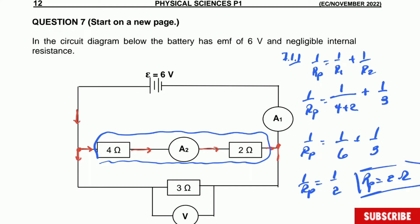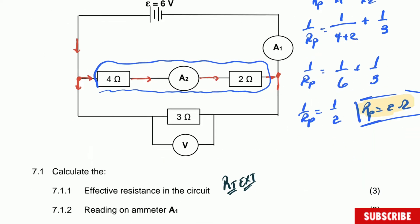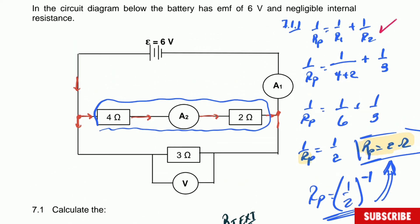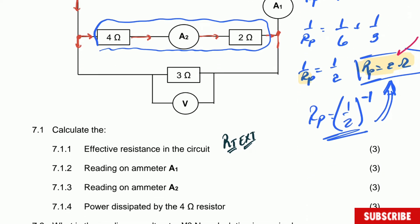There are three marks for 7.1.1: one for the formula, one for the substitution, and one for the final answer. Question 7.1.2 asks to calculate the reading on Ammeter A1. Since all the current comes together at A1, we are calculating the total current of the circuit. The total external resistance is the 2 ohms we just calculated, and the total potential difference is the EMF, which is 6 volts.